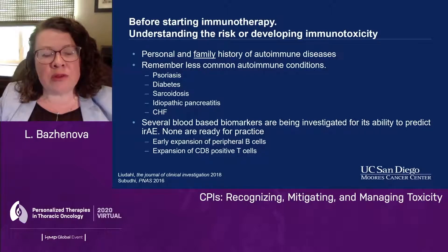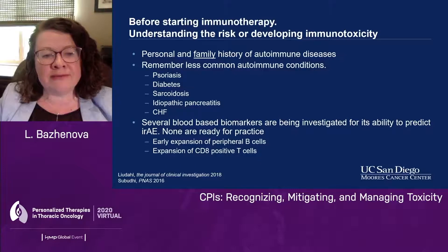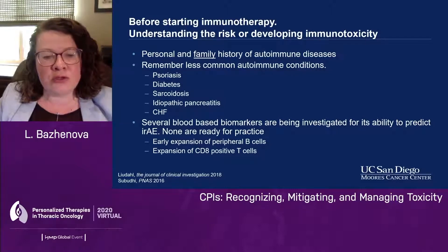Before starting immunotherapy, it is very important to understand the risk of your patient developing immunotoxicity. It is important to collect personal as well as family history of autoimmune diseases, and also remember less commonly known autoimmune conditions such as psoriasis, diabetes, and sarcoidosis. At this point, we do not have any blood-based biomarkers that are helpful for determining which patients will develop adverse events on immunotherapy.